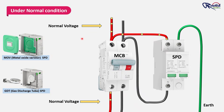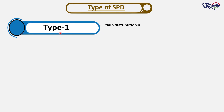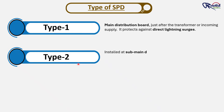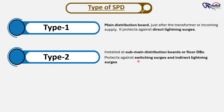Now let's learn about the different types of SPDs. There are mainly three types as per international standards. Type 1 SPD is installed at the main distribution board, just after the transformer or incoming supply. It protects against direct lightning surges and is a heavy-duty SPD, often using spark gap technology. Type 2 SPD is installed at the sub-main distribution board (SMDB) or floor DBs. It protects against switching surges and indirect lightning surges, and is the most common SPD used in residential and commercial buildings.